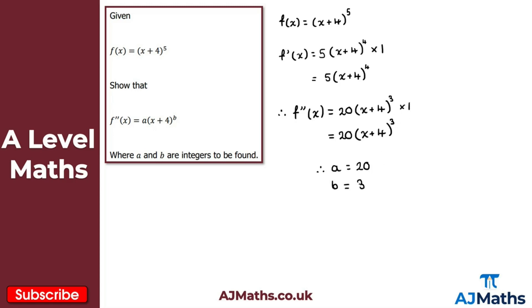From here we can identify the values: a equals 20 and b equals 3. That's the solution to question 3, and that brings us to the end of this video on the chain rule. In the next video, we're going to take a look at the product rule.